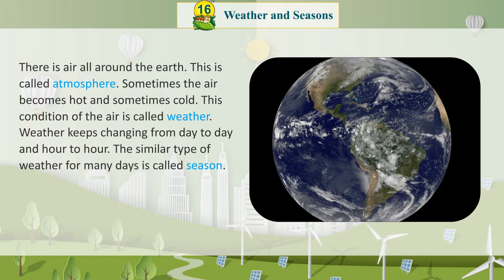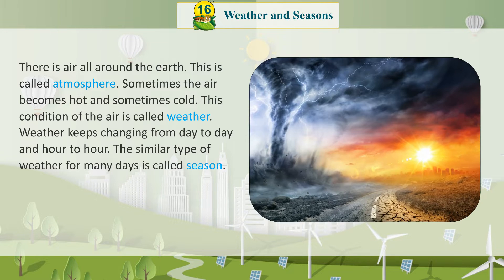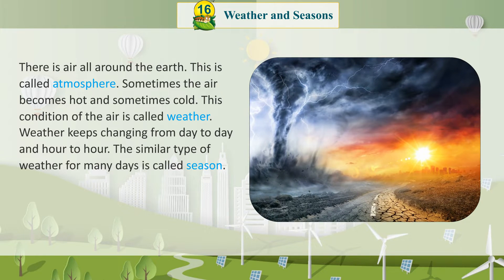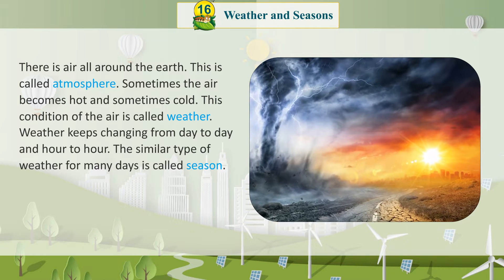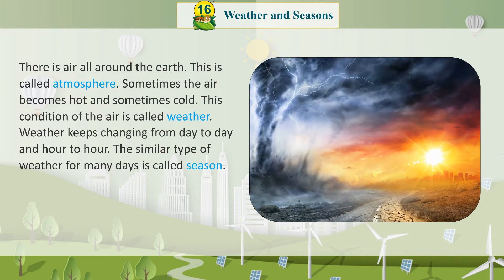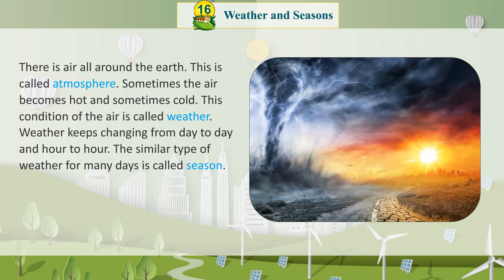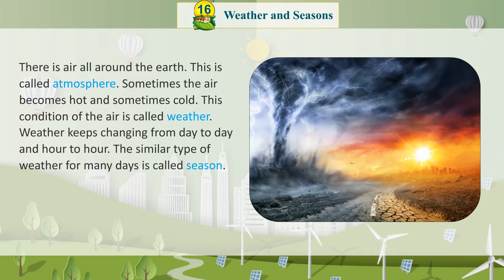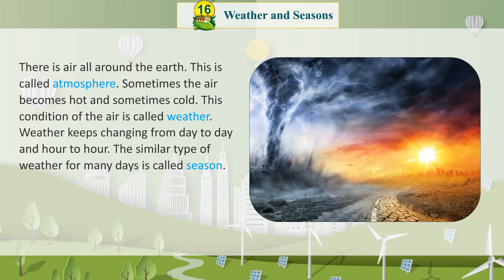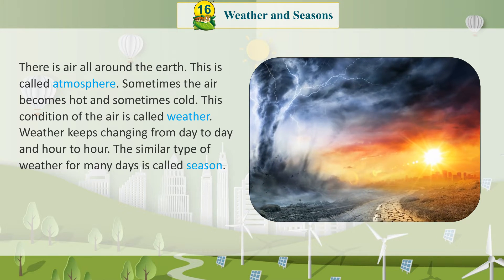There is air all around the earth. This is called the atmosphere. Sometimes the air becomes hot and sometimes cold. This condition of the air is called weather. Weather keeps changing from day to day and hour to hour.